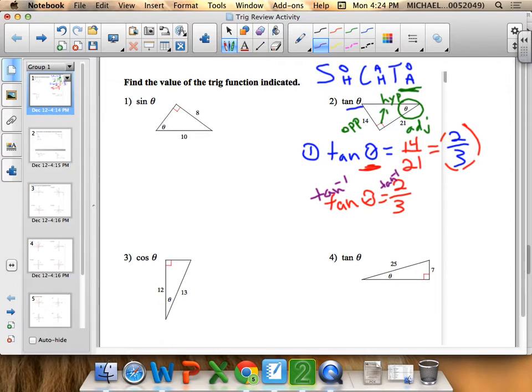So it's tangent inverse of both sides, cancels out there, so I'm left with theta equals—punch that on your calculator. Make sure you're in degree mode, so you might have to hit mode on your calculator and go over to degree, make sure it's there. And then I hit tangent, or second tan for tangent inverse of two divided by three, close up the parenthesis, and I get theta equals 33.7.